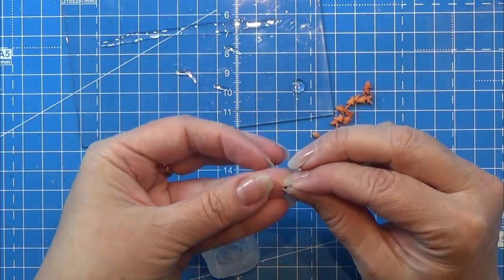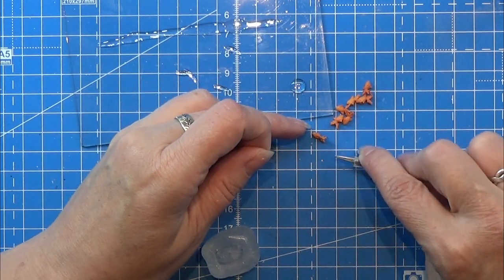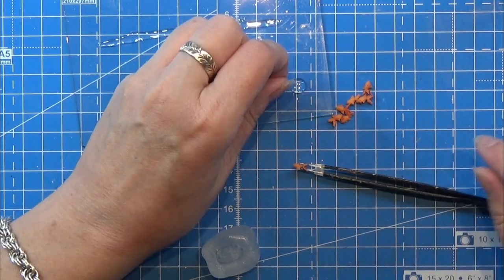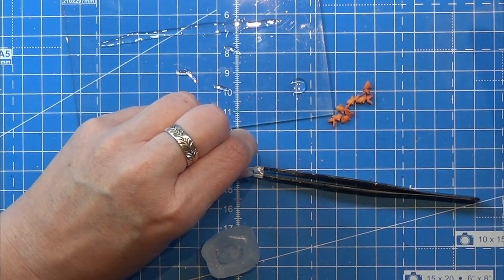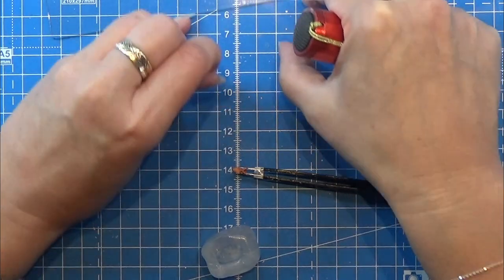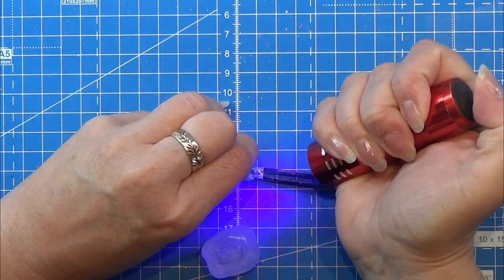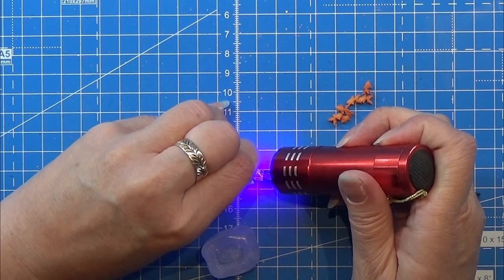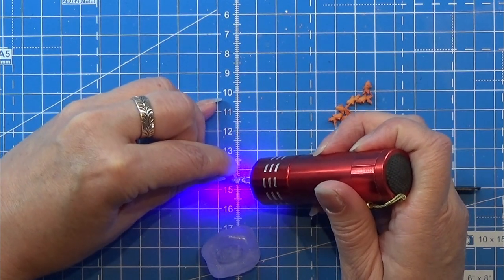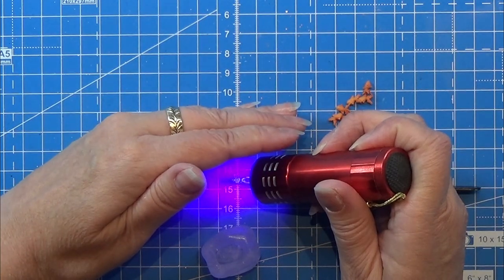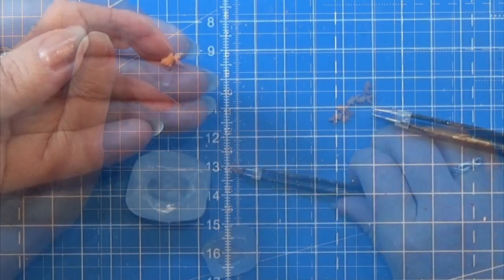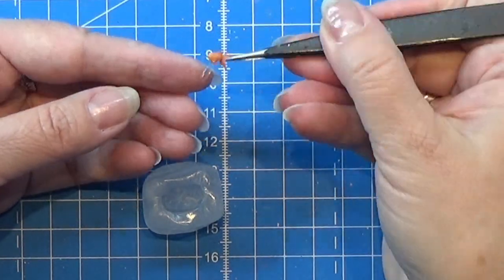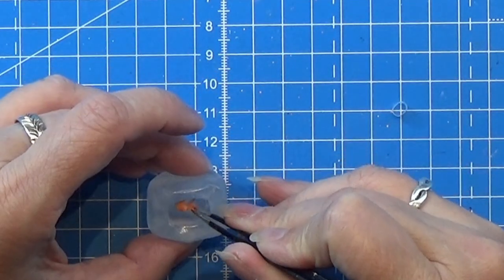Then I took one of these smaller pieces here and I am taking one of my goldfish. Dipping the little piece in UV resin, placing it on the bottom of my goldfish and then hitting it with my UV torch. Making sure that this little piece is sitting really good under my fish.